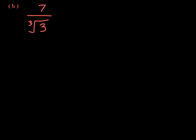We have 7 over the cube root of 3. The question becomes what do I multiply the denominator by so the cube root goes away? If you think all you have to do is multiply the denominator by itself, you'd be wrong. The cube root of 3 times the cube root of 3 gives the cube root of 9, and 9 is not a perfect cube — so the radical does not go away. Multiplying the denominator by itself did not work.